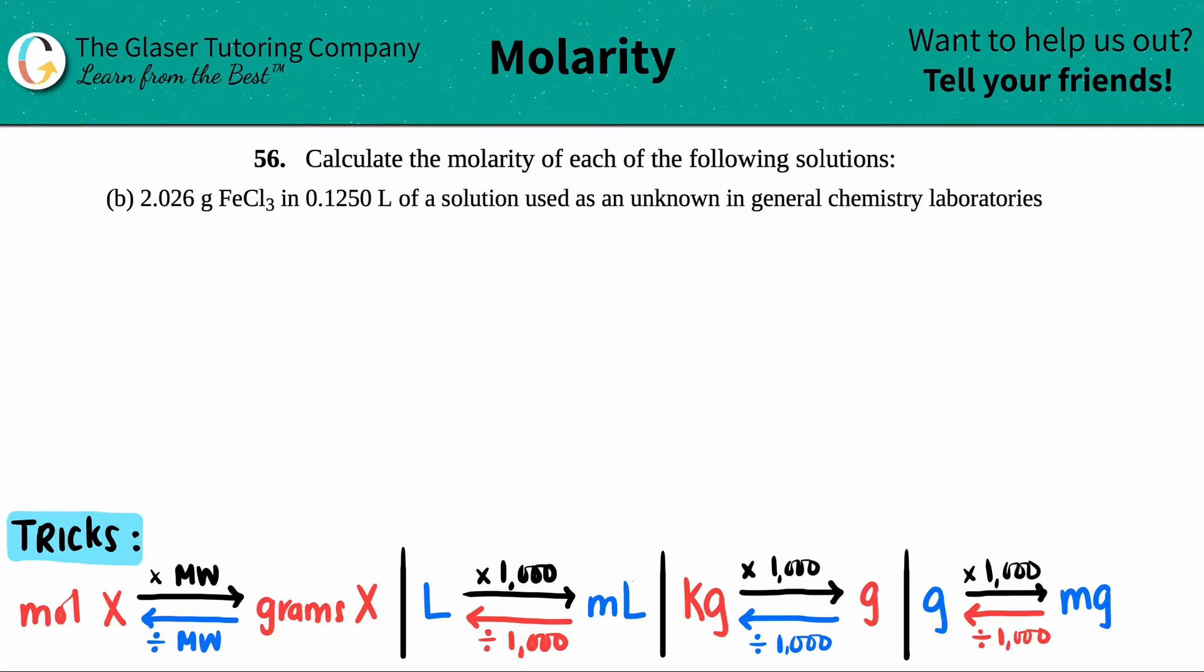Number 56: Calculate the molarity of each of the following solutions. In this case, they told us that we have 2.026 grams of iron(III) chloride, FeCl3, and that's all being placed in a 0.1250 liter solution. This is used as an unknown in general chemistry laboratories.